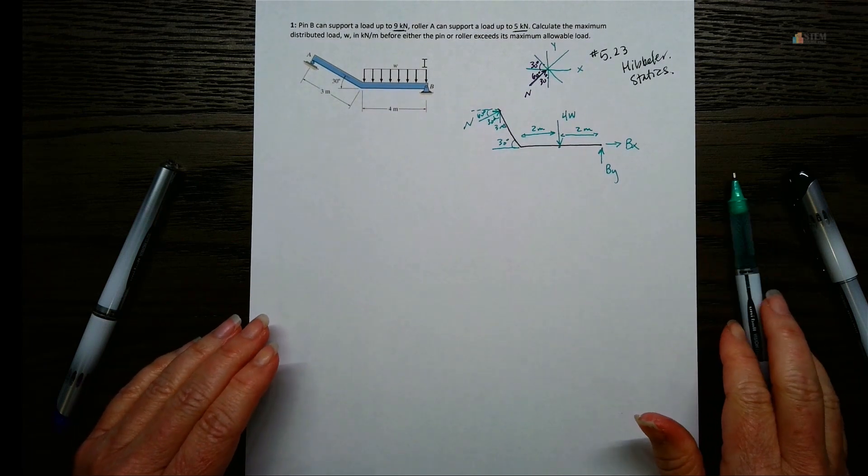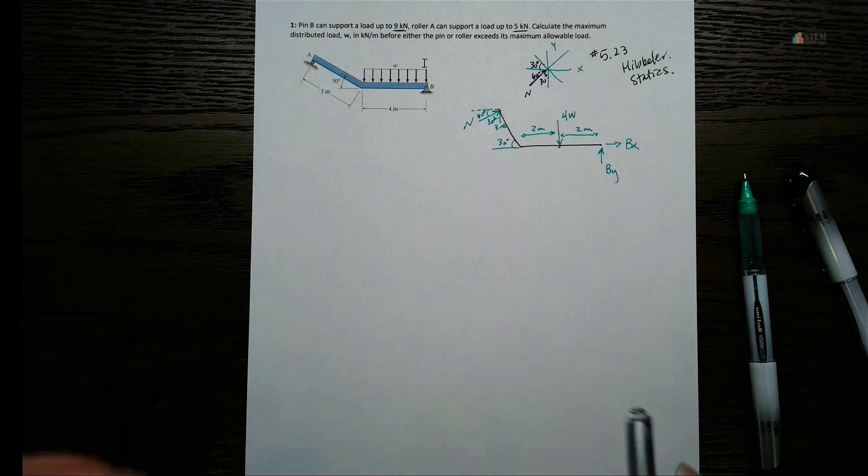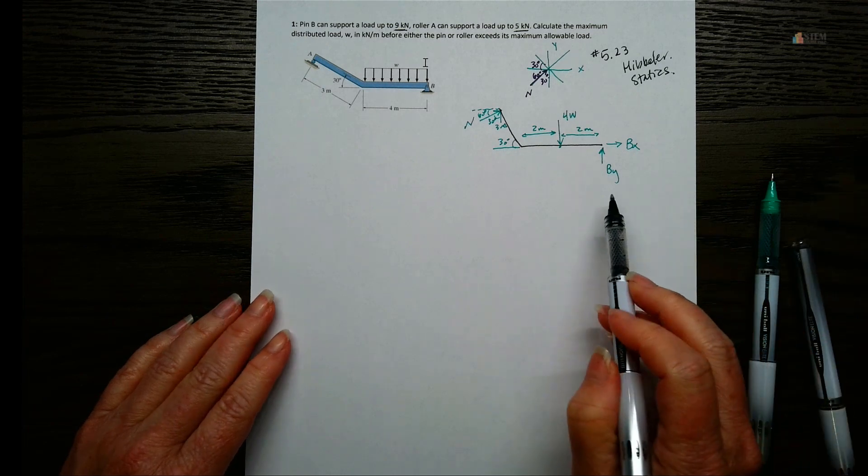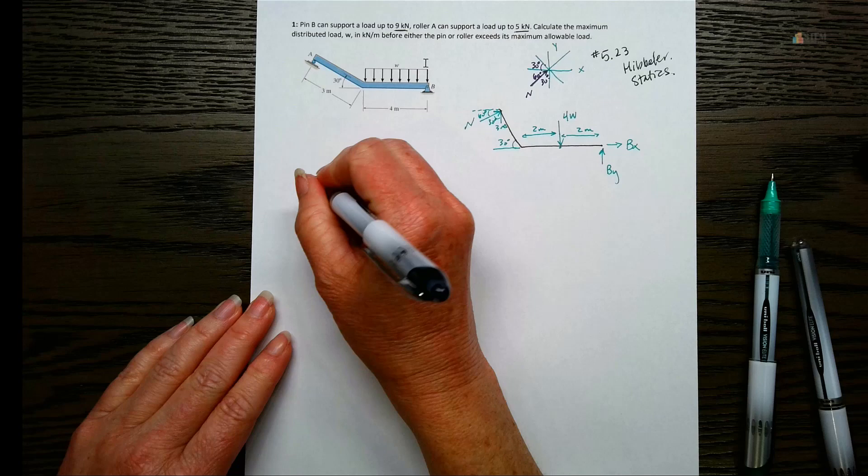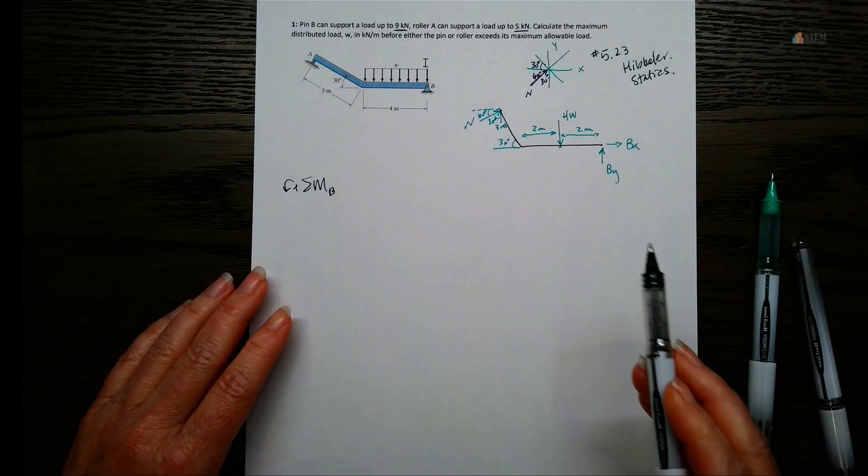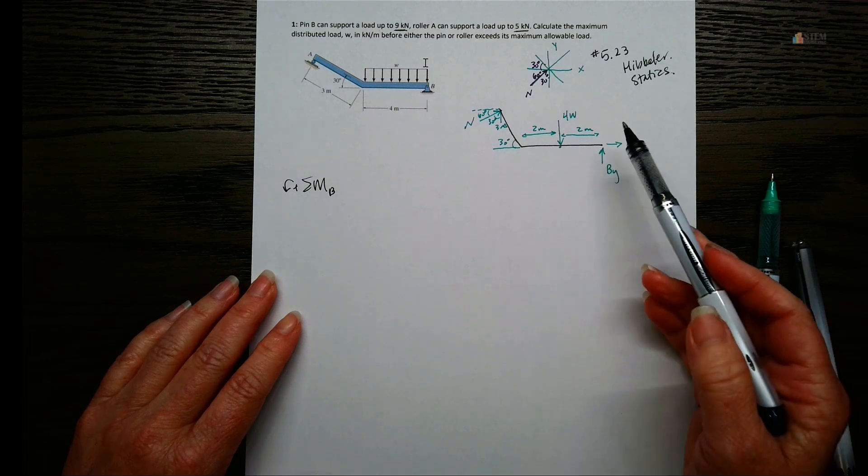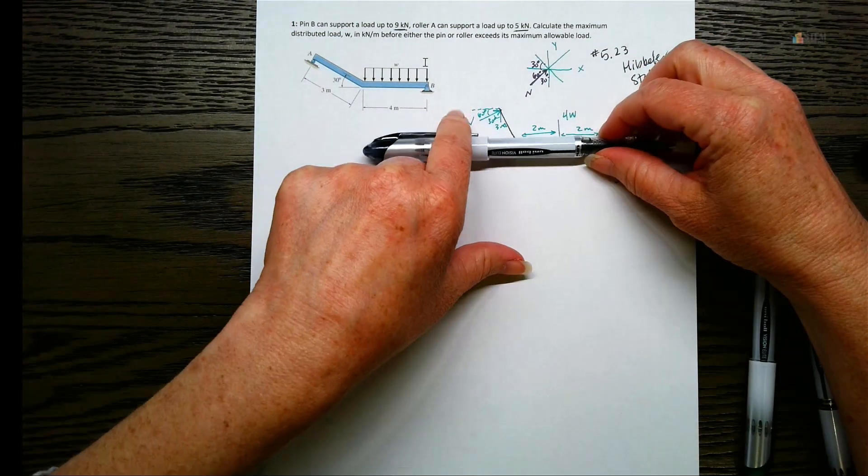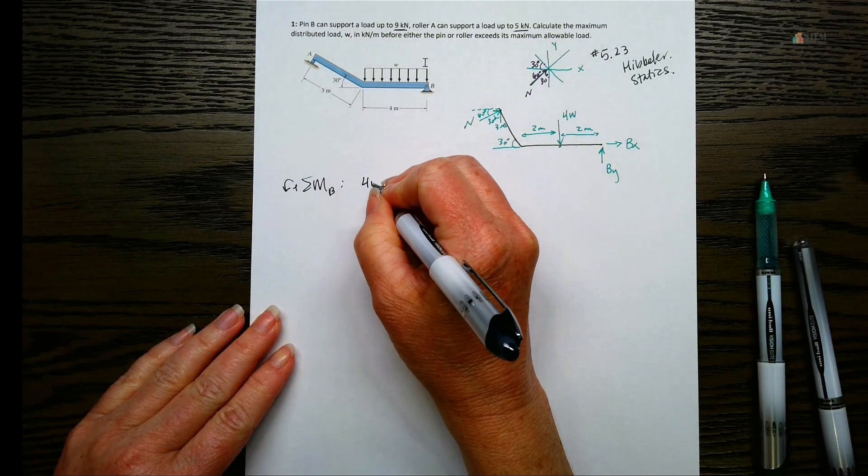So we've got that. And we can include those angles on here. So this one would be 60. That one there would be 30. So now let's go ahead and start doing our equilibrium equations. Because we have all the stuff that we need now. I'm going to go ahead and start with a moment equation first. Just because that gets rid of BX and BY. So let's do that. Let's do a moment about B. I think counterclockwise is positive. So let's just start with 4W.